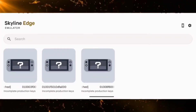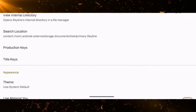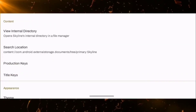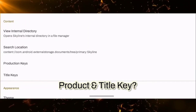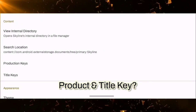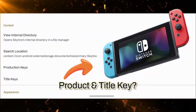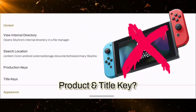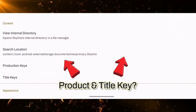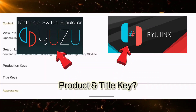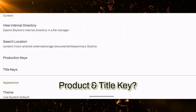The question marks appear because the product key and the title key are missing. The best thing you can do is extract them from your own Nintendo Switch. If you don't have a Nintendo Switch and you are looking for an easy way, you can get them from other emulators which are already available on PCs.